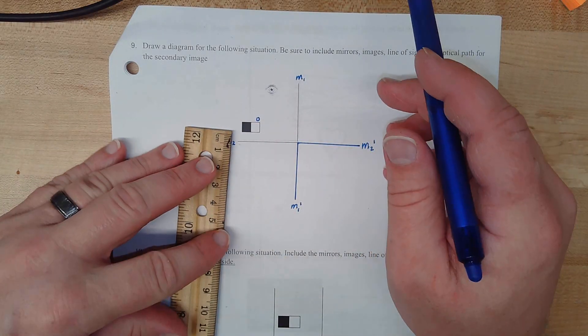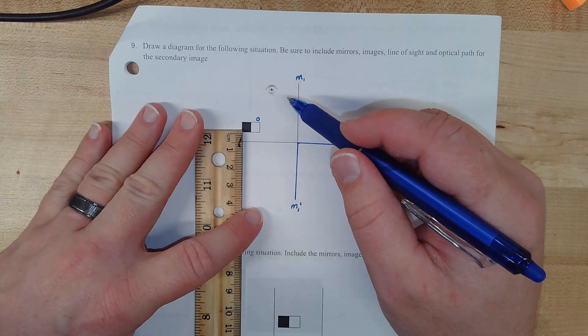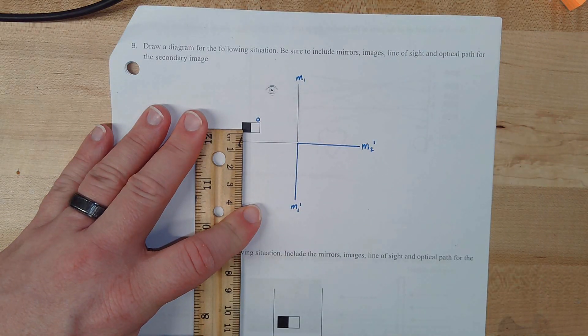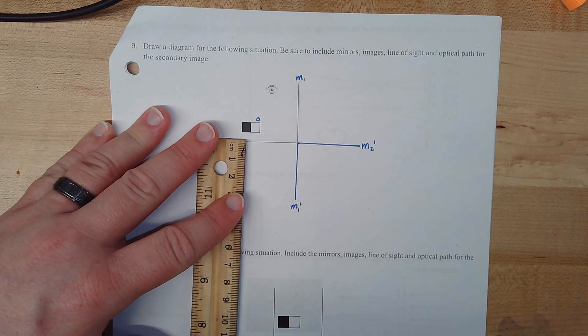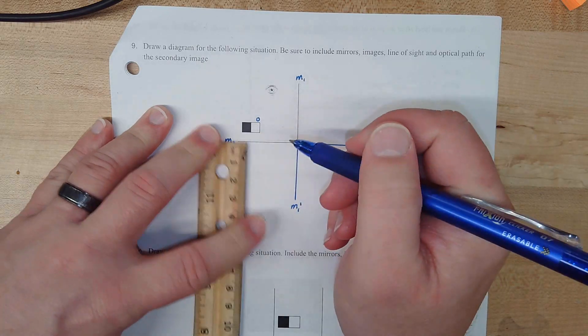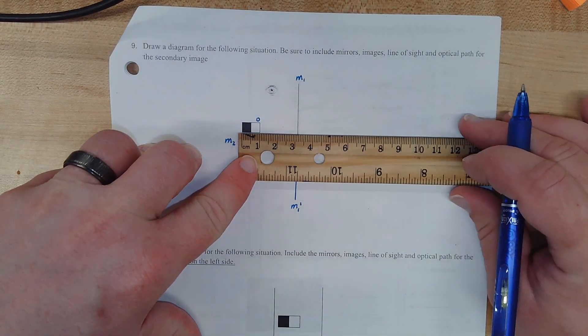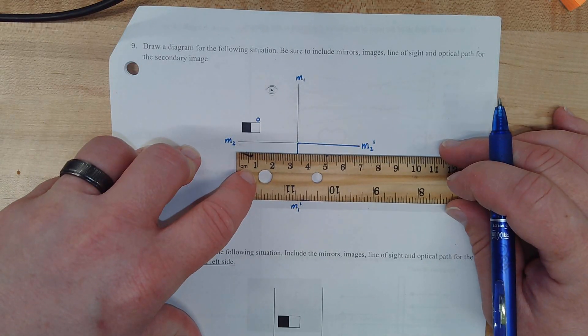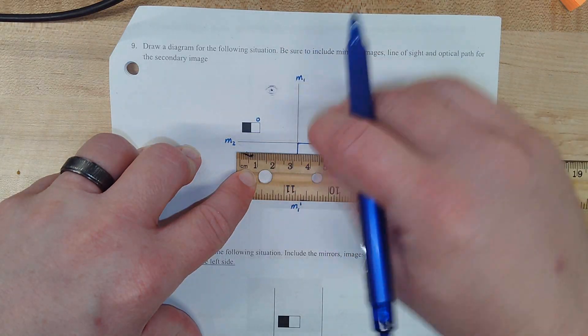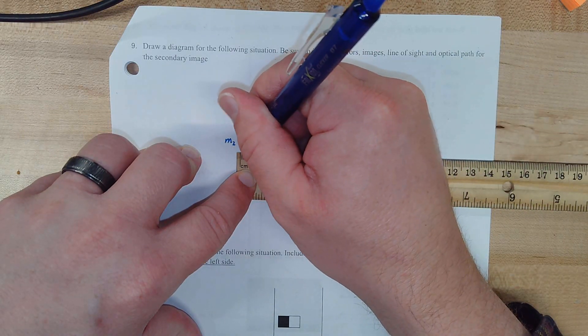Our next step is we are going to take our object and reflect it at an equal distance across the mirror. I see this as being about 5 millimeters from the mirror, so we're going to make a mark about 5 millimeters from the mirror. Then I'm going to measure the width of my object there. I see it to be about 10 millimeters. So I'm going to draw my object the same width down below.